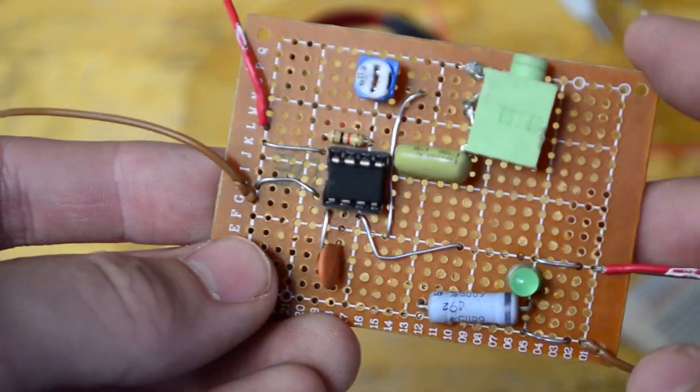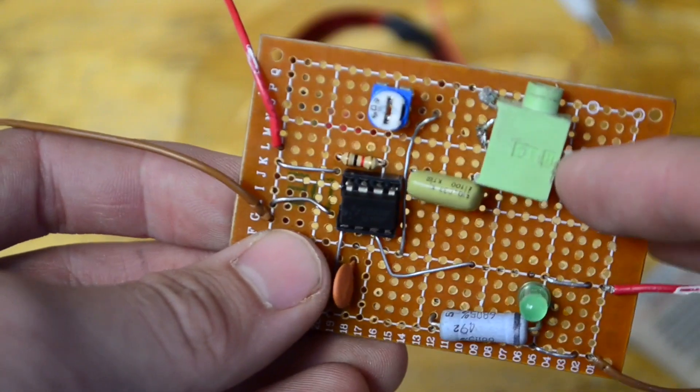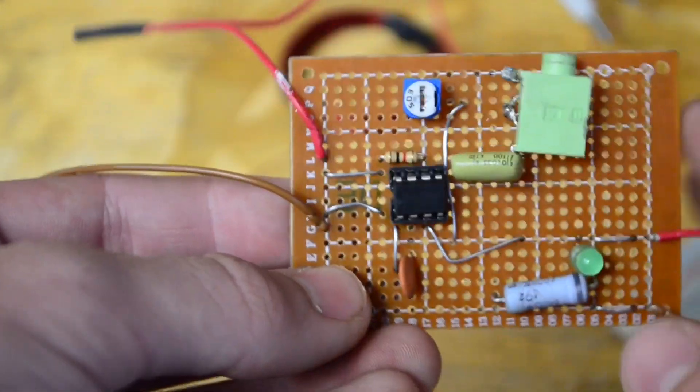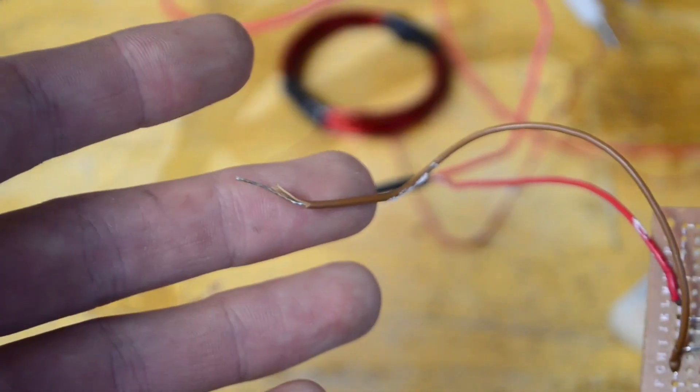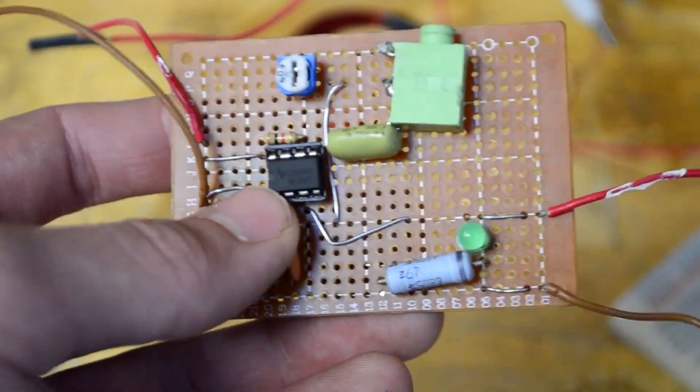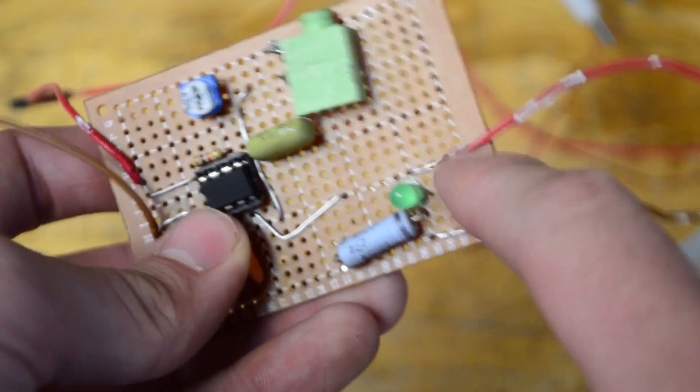In a previous video we made this frequency generator. I made a few changes though - this audio modulation was for a plasma speaker but we won't be using that. For this frequency generator we input around 2.9 volts and then depending on how we tune this variable resistor it gives us different frequencies out of these outputs.